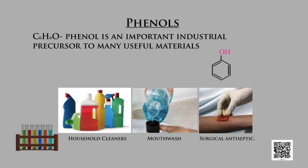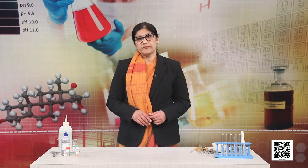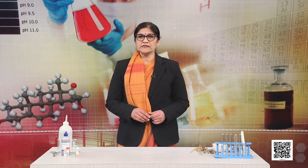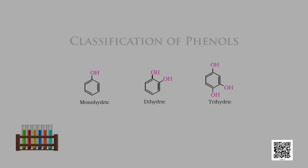Phenol may have been the first surgical antiseptic. Today we are going to discuss about the classification, nomenclature, preparation and properties of phenols. Like alcohols, phenols may also be classified as mono, di, tri or polyhydric compounds depending upon whether they contain 1, 2, 3 or many OH groups respectively in their structures.